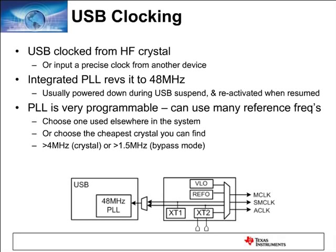If you're looking to clock your USB system, you can use a HF crystal at any frequency — for example, a 6 MHz or 8 MHz RF crystal already on your system, or just the cheapest crystal you can find on the market. Alternatively, if you have an externally available clock source from elsewhere in the system, you can put the MSP430 clock in bypass mode and take in a digital input.